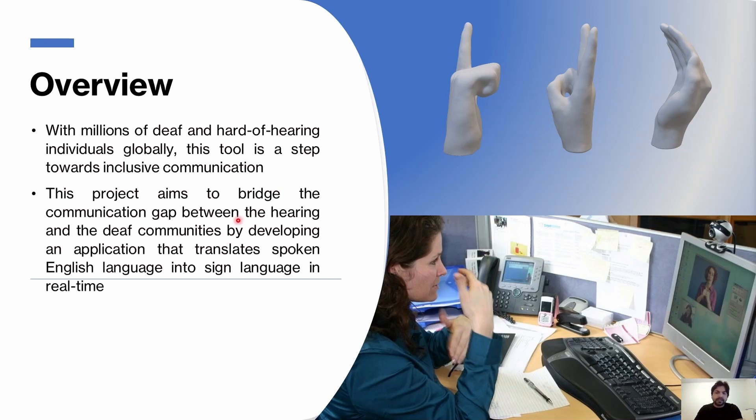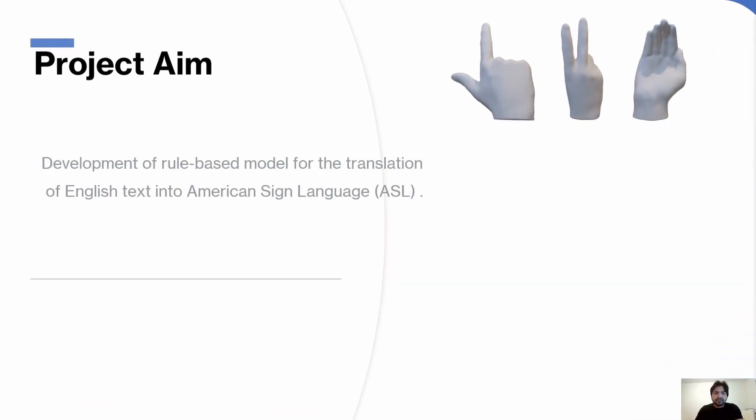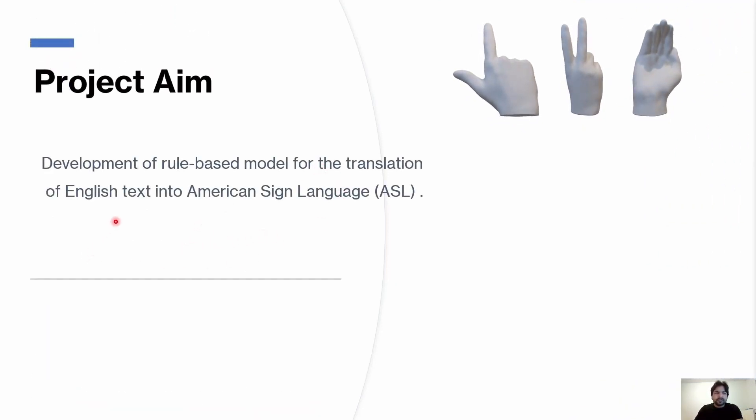As a result, meaningful interaction and understanding between deaf and hearing communities are often difficult. There is a need for innovative solutions like the development of sign language converters. This project aims to develop a rule-based model for translation of English text into American Sign Language.